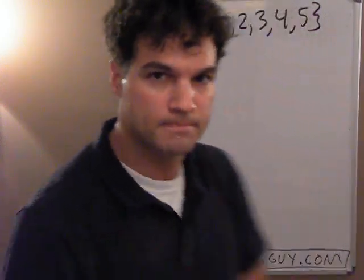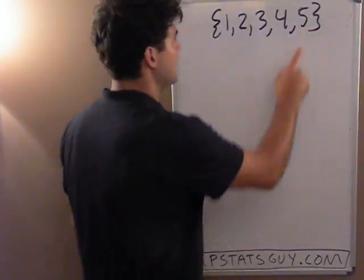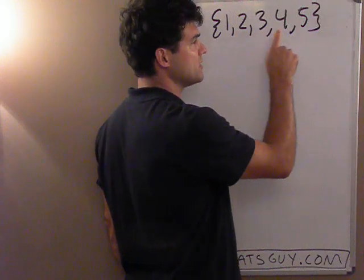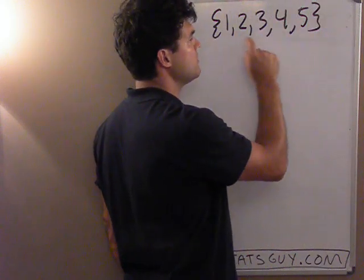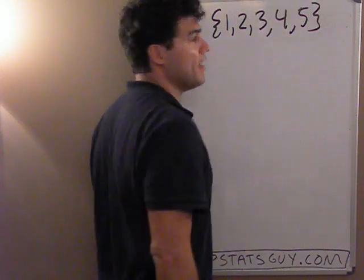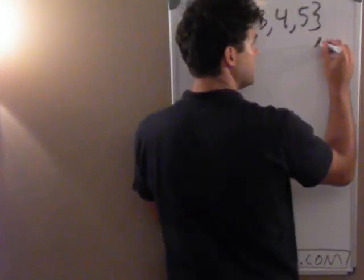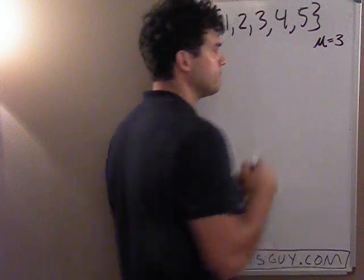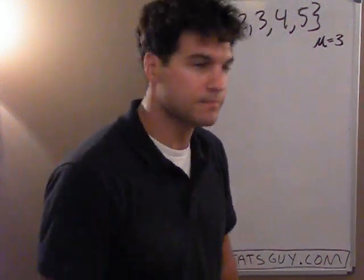And I'm going to ask you a question: what's the mean? Well, if I add this up — 1 plus 2 is 3, plus 3 is 6, plus 4 is 10, 15 — divided by 5. The mean is 3. So mu, we'll say this is a population, equals 3. Okay, so I found the mean.